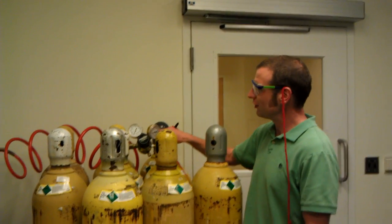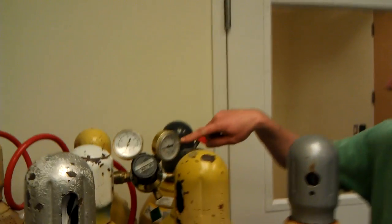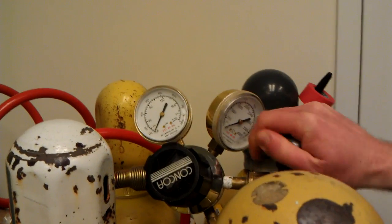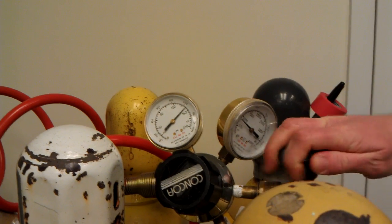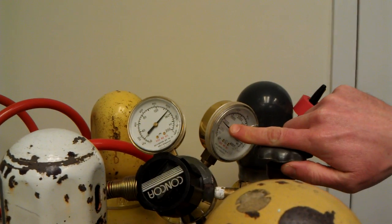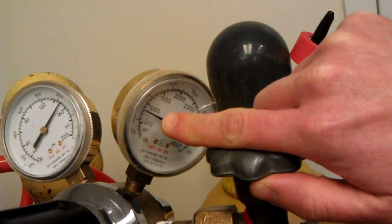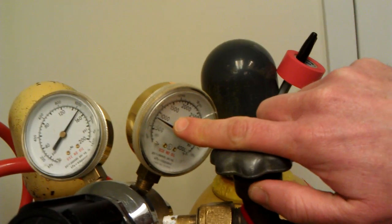This is where you turn the gas on on the tank. You should look here on the readout once you turn the tank on and make sure that there is at least about 700-800 PSI on the regulator when you get started. If there isn't, you should change tanks.